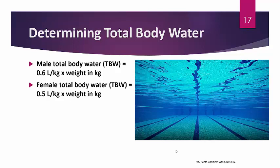Why 0.6 for males and 0.5 for females? Males tend to be more muscular, and muscle contains a lot of water — hence the slightly higher number. These are population estimates, and they are bolded, so memorize them. Total body water is an important calculation for treating both hyponatremia and hypernatremia.